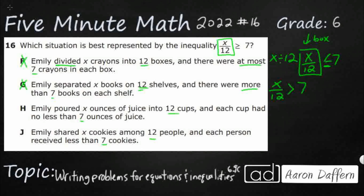H: Emily poured x ounces of juice into 12 cups — once again equal groups, so x over 12. And each cup had no less than 7 ounces. "No less than 7" means it can equal 7; it just can't be less than 7. That's exactly x over 12 greater than or equal to 7. That's exactly what we're looking for — H is our answer.